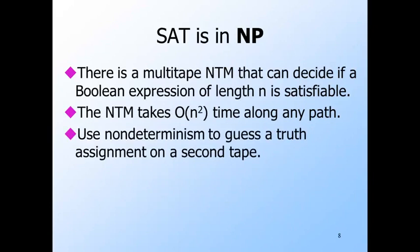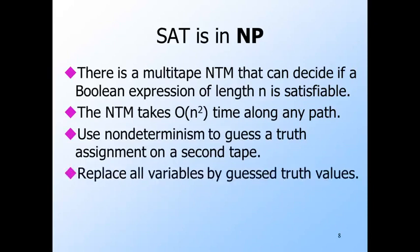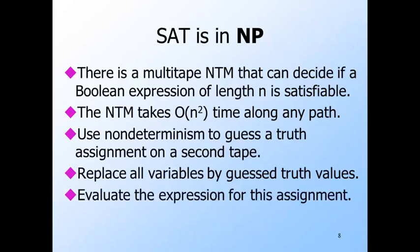The power of non-determinism lets us guess a truth assignment. We'll use a second tape to write down the guess of a truth value for each variable. Then, in the expression itself, replace each variable by its guessed truth value. We can now evaluate the expression bottom up. The non-deterministic machine accepts if the value of the expression with this assignment is true. The number of assignments could be exponential in n, the length of the expression. But the non-deterministic machine works on all assignments sort of in parallel, thus appearing to finish in time that is polynomial in the input size, because we only count the time taken for processing one single assignment.